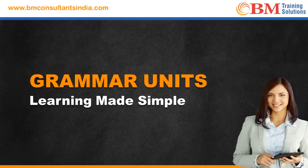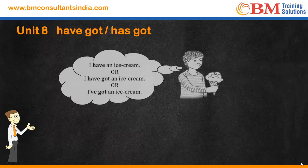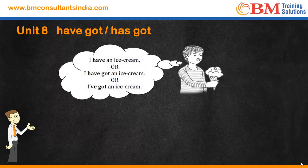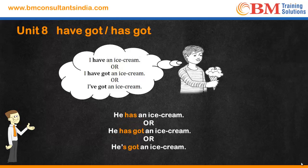Welcome to Grammar Unit Lessons by BM Training Solutions. Let's study the use of 'have got' or 'has got' in English. The boy is thinking: 'I have an ice cream.' He can also say 'I have got an ice cream' or 'I've got an ice cream.' About him, we say 'He has an ice cream,' which can also be said as 'He has got an ice cream' or 'He's got an ice cream.'